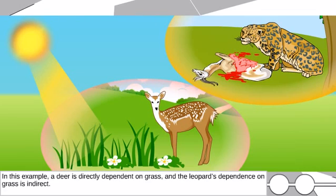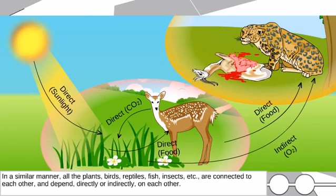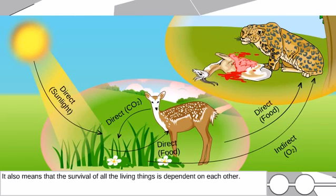In this example, a deer is directly dependent on grass, and the leopard's dependence on grass is indirect. In a similar manner, all plants, birds, reptiles, fish, insects, etc. are connected to each other and depend directly or indirectly on each other. This also means that the survival of all living things is dependent on each other.